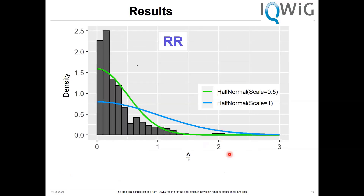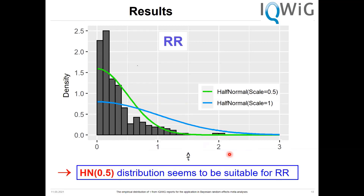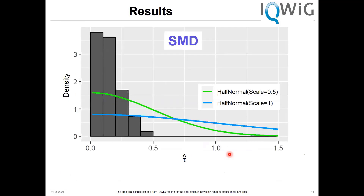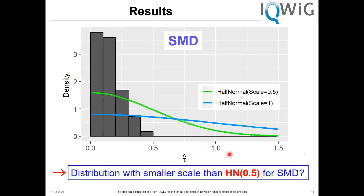The same holds for the risk ratio. For the SMD, we can think about using a distribution with an even smaller scale parameter, because we find no situation where tau falls in the fairly extreme range.